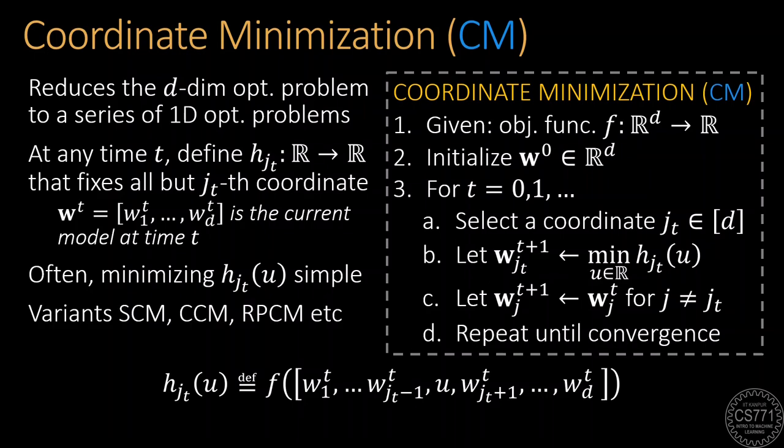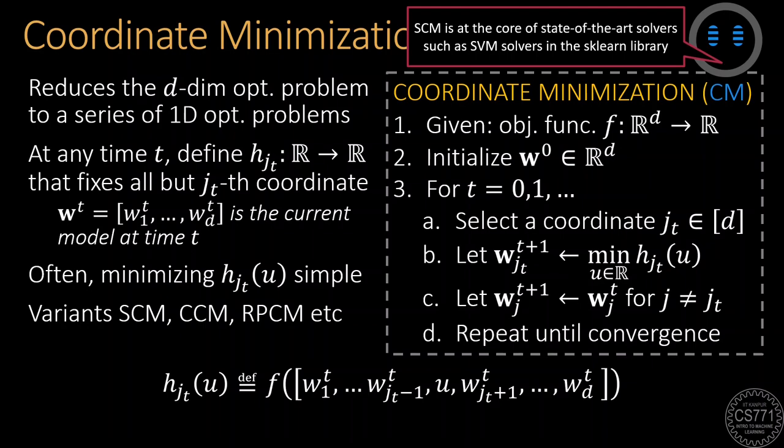As before, we can have variants of coordinate minimization based on how we choose the coordinates in each iteration. Coordinate minimization can offer very rapid progress and is a core component of modern SVM solvers in popular machine learning libraries.